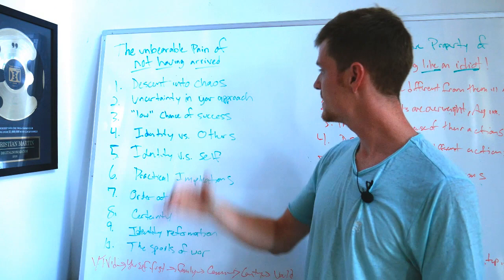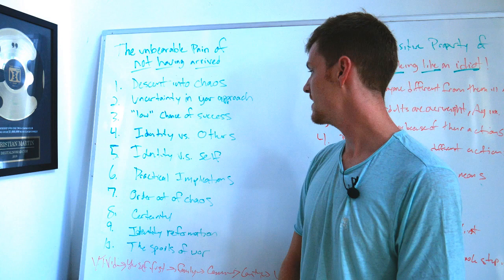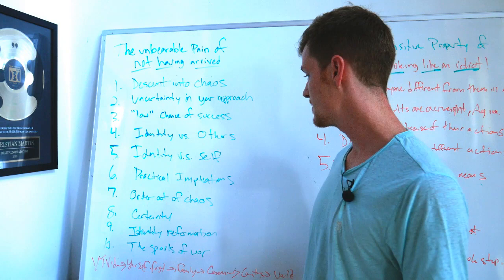Let's go through it one more time. The ten stages of the unbearable pain of not having arrived. If you're setting out for an artistic or entrepreneurial endeavor we have descent into chaos. Number one. Two, uncertainty in your approach. Three, the low chance of success. Four, identity versus others. Five, identity versus self.